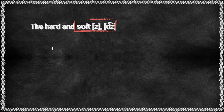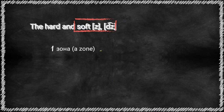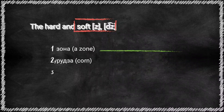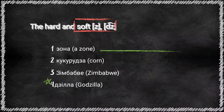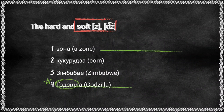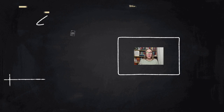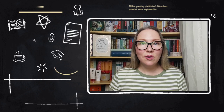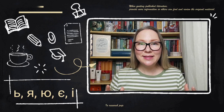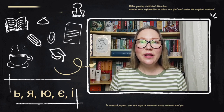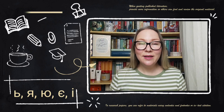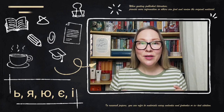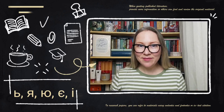Also, З and ДЗ can be either hard — like in «зона», «кукурудза» — or soft. «Зімбабве» — Zimbabwe, «Годзілла» — Godzilla. З or ДЗ become soft when they are followed by letters such as the soft sign, Я, Ю, Є, or І.